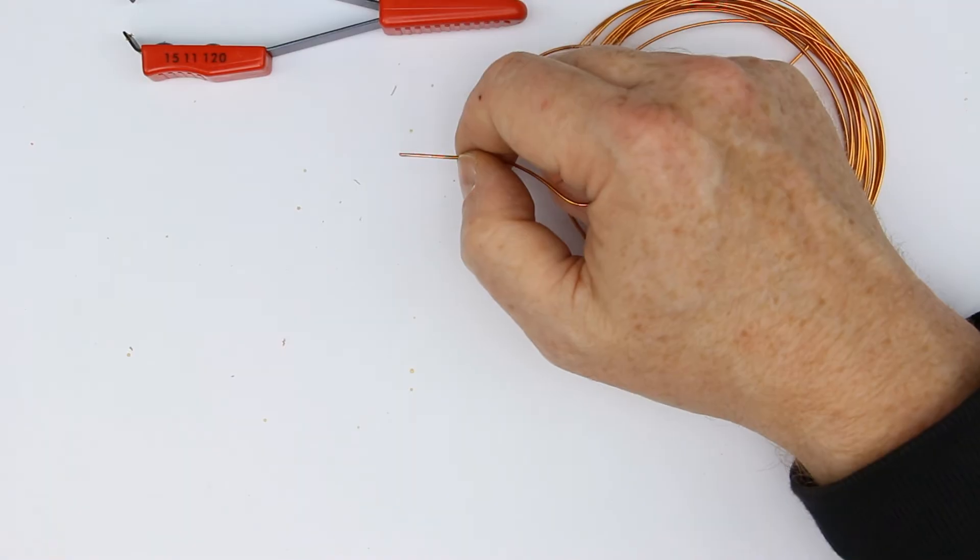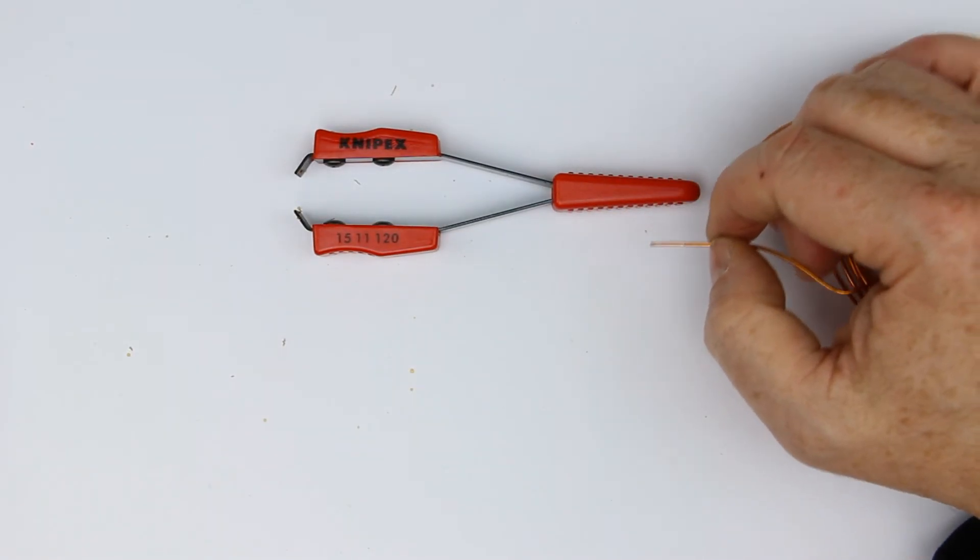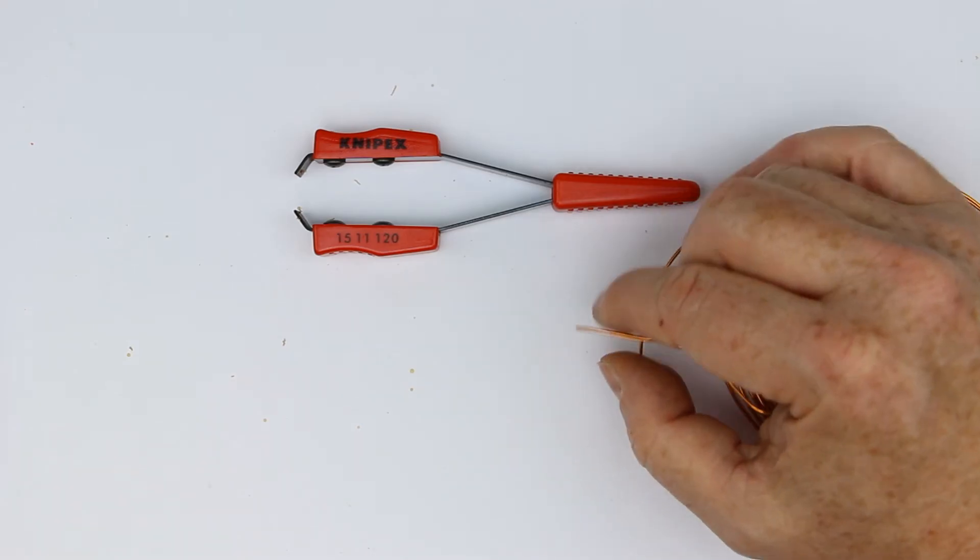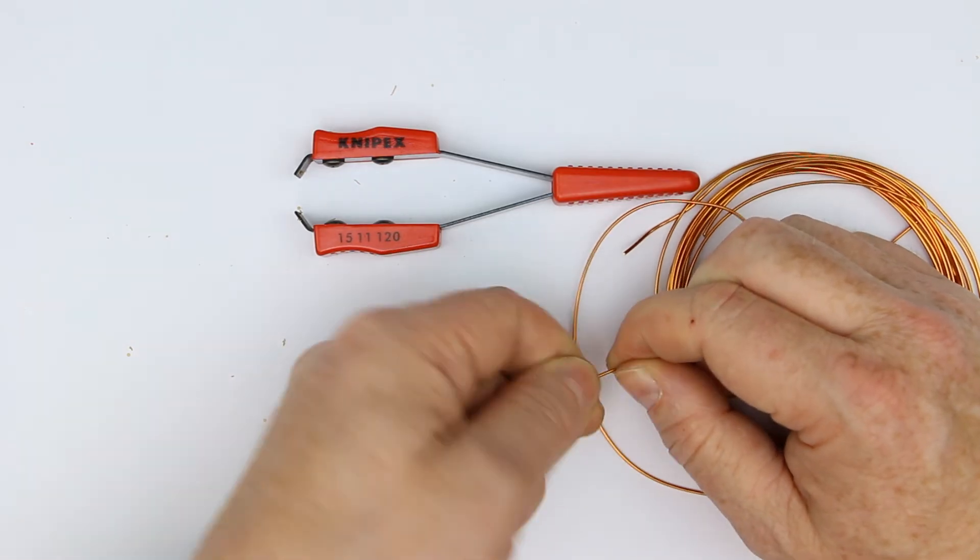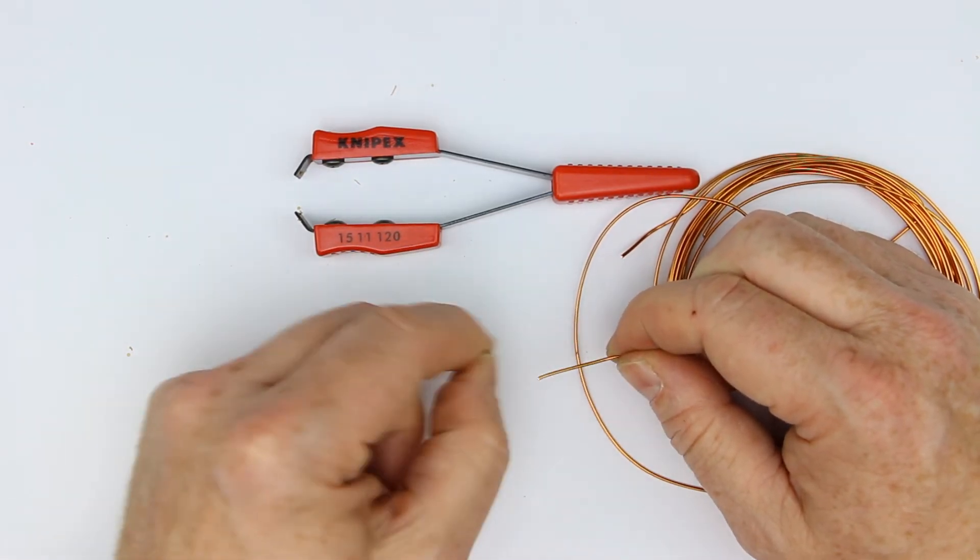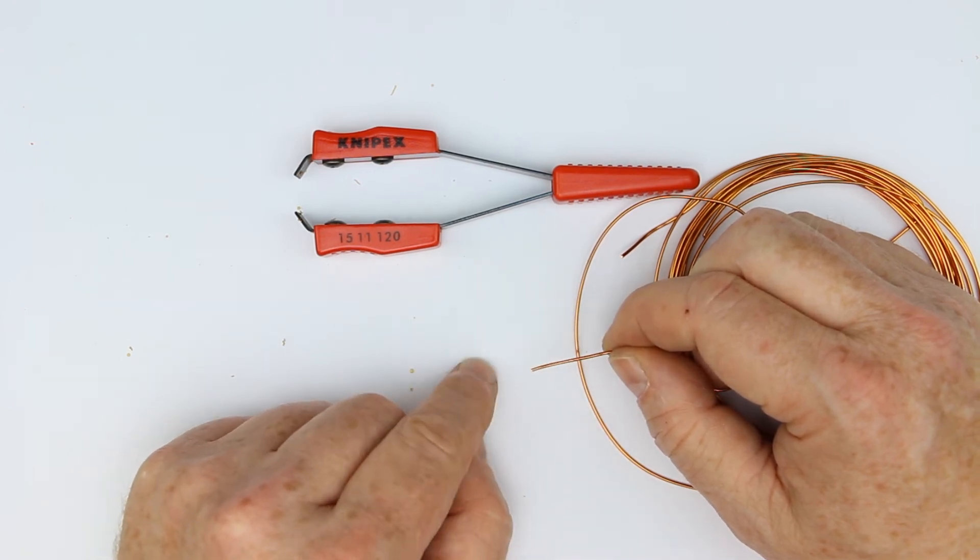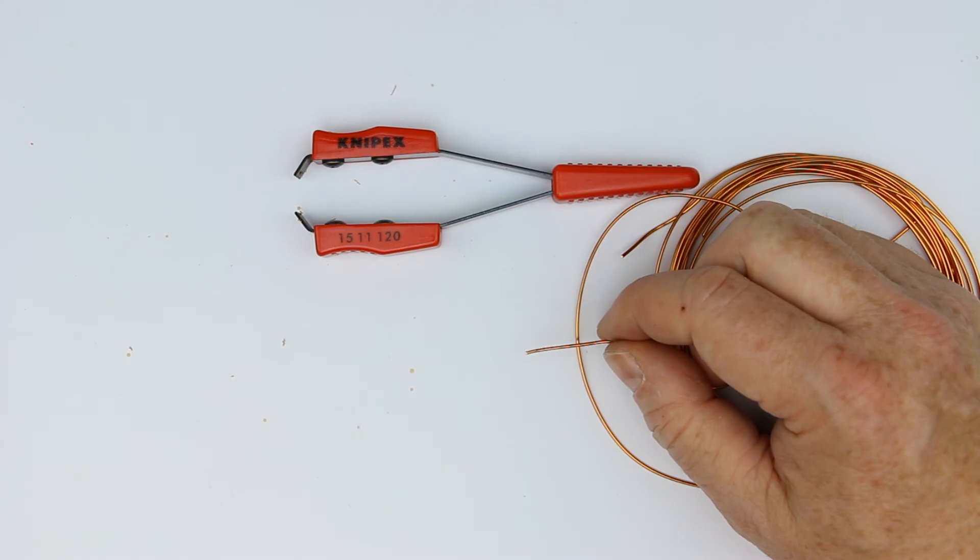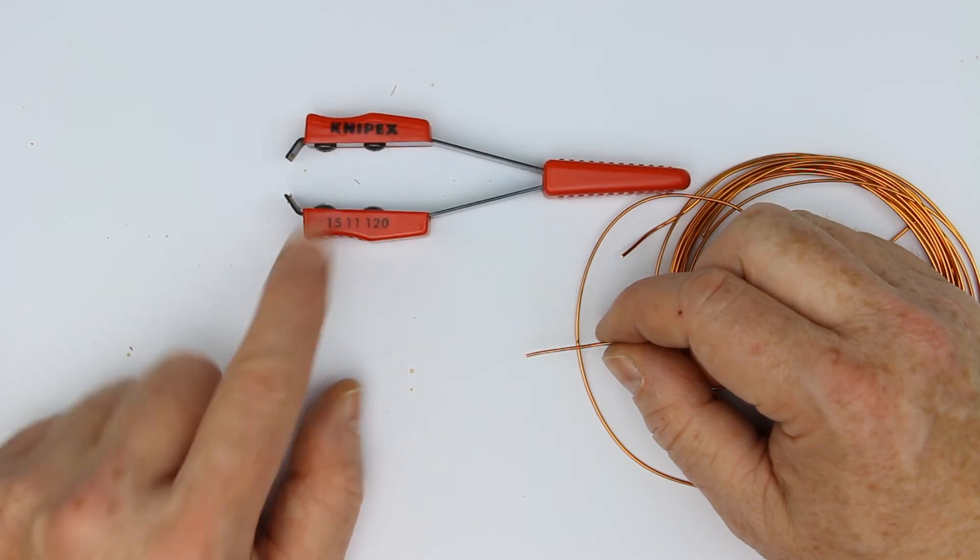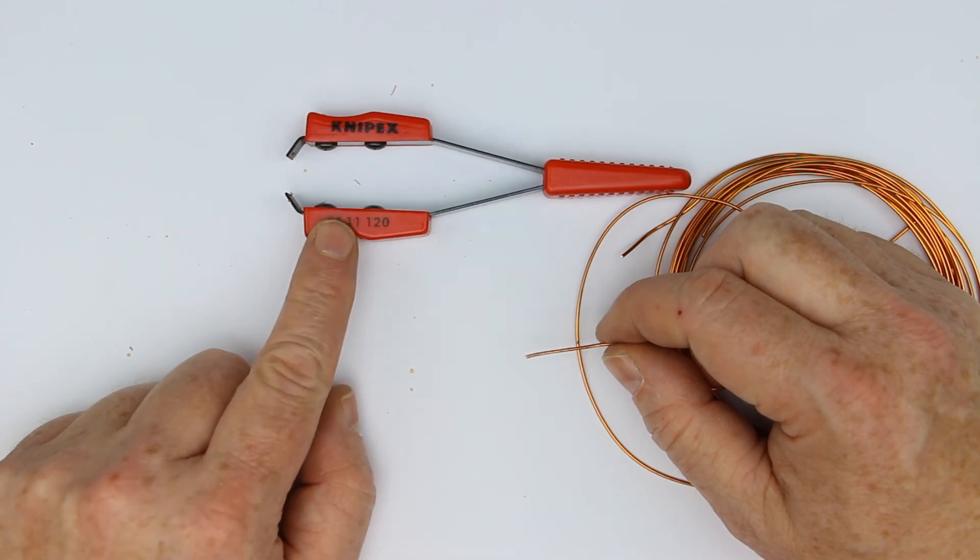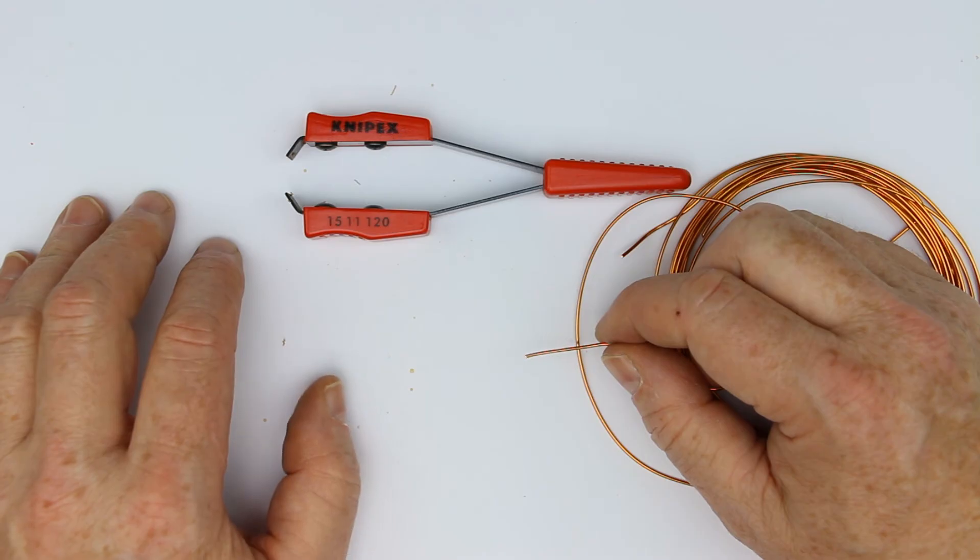When I discovered this tool I was really happy that I no longer had to use sandpaper. That's the old method - you take a piece of sandpaper and twist it around often enough, then of course the coating also will come off. But that's really a pain. There's nothing better than this relatively cheap tool for getting the coating off of enameled copper wire.